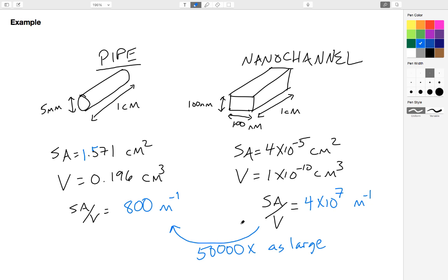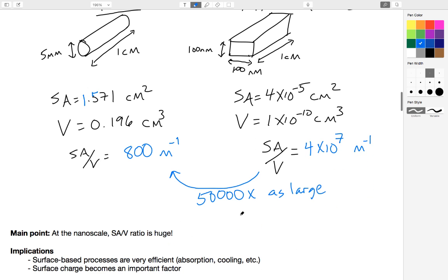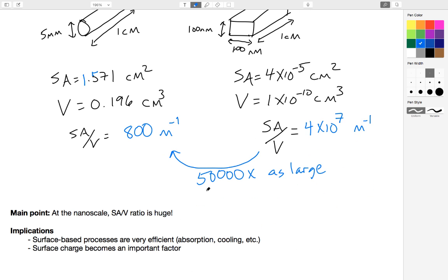What this means practically speaking is that some things work much better as dimensions become small. Take home point: at the nanoscale, surface area to volume ratio is huge—millions, tens of millions, even hundreds of millions, and typically several orders of magnitude larger than macroscale objects. The implications are that some things work better. Processes that depend upon surfaces become much more effective, much more efficient at the nanoscale. So absorption and cooling are two good examples.